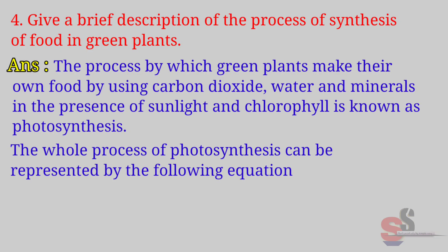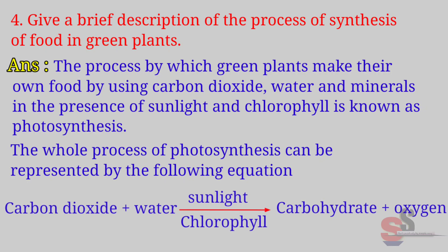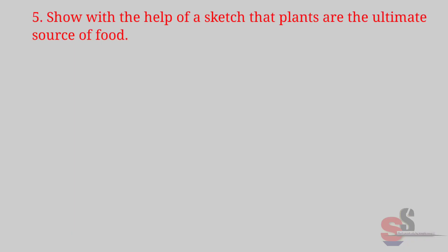The whole process of photosynthesis can be represented by the following equation: Carbon dioxide plus water, in the presence of sunlight and chlorophyll, forms carbohydrate and oxygen.